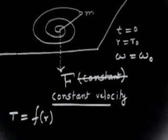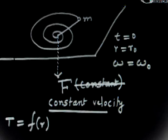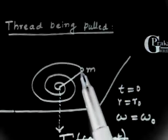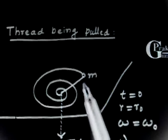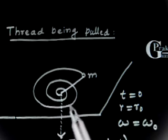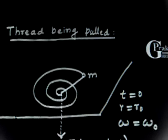Let us analyze the motion first. The mass is initially moving, but as the length is pulled, the radius becomes smaller and smaller. The initial radius is r₀; after some time the radius decreases and the object spirals inward, finally falling into the hole when the radius becomes zero.